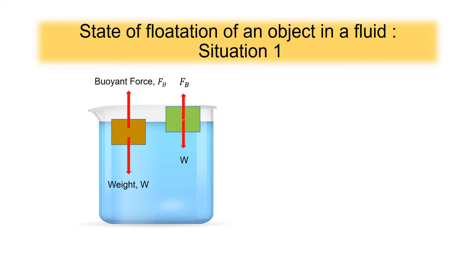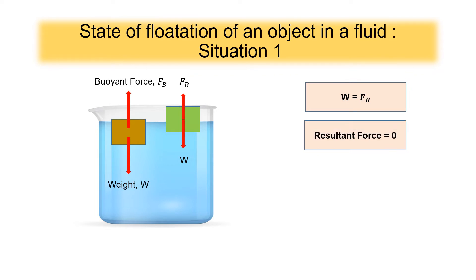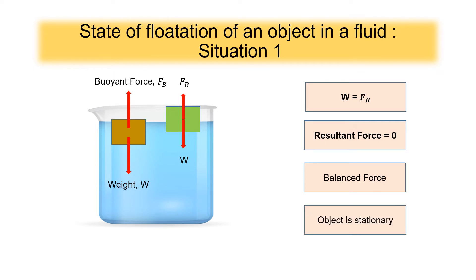Okay, now let's take a look at the first situation. The diagram shows an object floating in the water. When the object is floating, it means the object is in the equilibrium state where weight and buoyant force are balanced — the magnitudes of the buoyant force and weight are equal. Thus, the resultant force acting on the object is equal to zero, so the object does not move upward or downward and remains stationary.